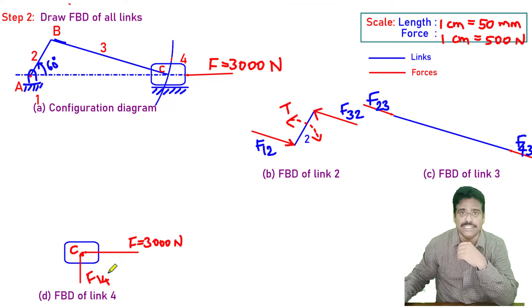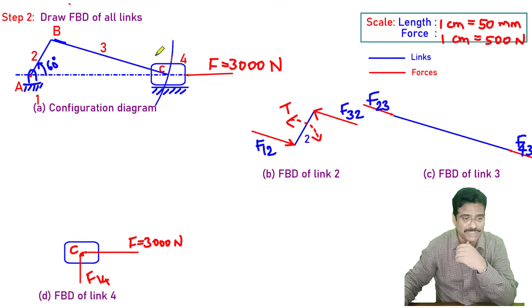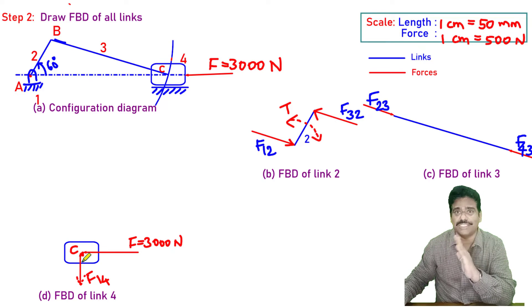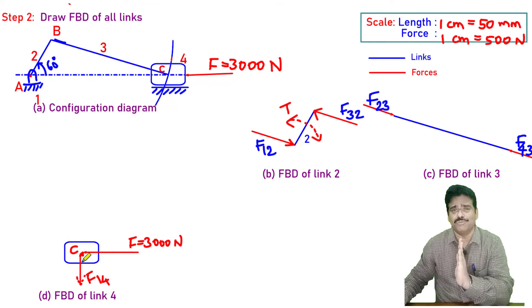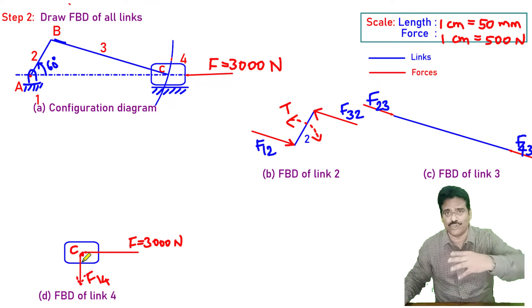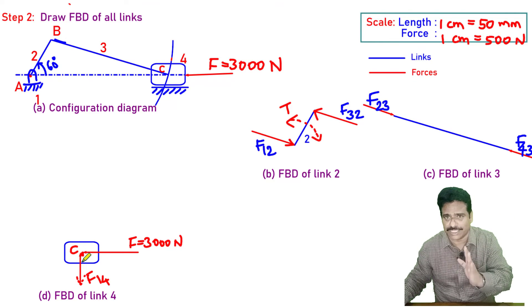You must be asking, F14 can be even downward also because from the other end, you are right. This can have this side also. I know that it is vertical, but whether moving upward or moving downward, the reaction force or F14 we are not sure right now. Is that clear? It can be in any of the directions. I agree with you.